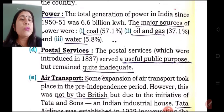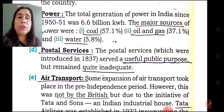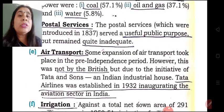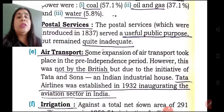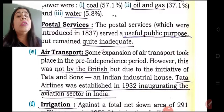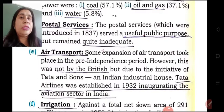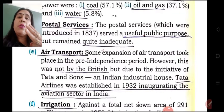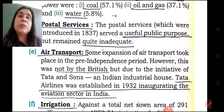The fourth area is postal services. Useful public purpose was served through postal services, but they also remained quite inadequate because of shortage of funds. Air transport was not developed by the Britishers, but the initiative for the development of air transport was taken up by Tata and Sons — an Indian industrial house. Tata Airlines was established in the year 1932, inaugurating the aviation sector in India. So railways and roadways were developed by the Britishers, but roadways were inadequate. They also supported waterways, while air transport was started by Tata and Sons.